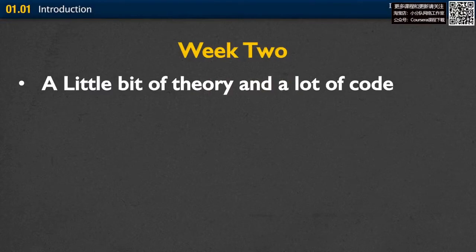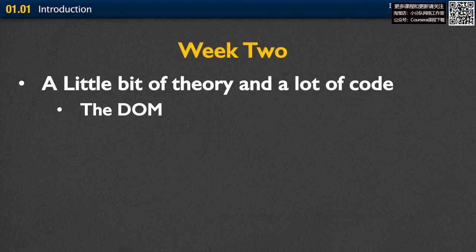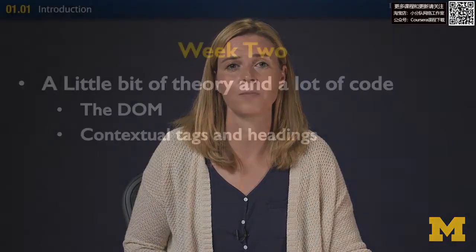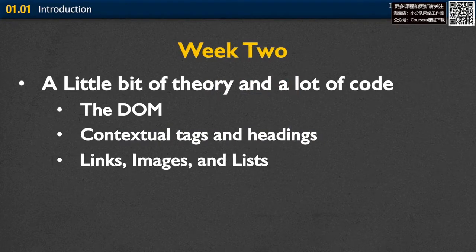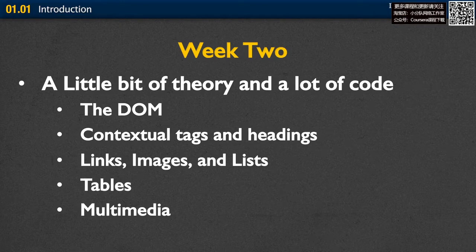In week two, we're going to talk a little bit of theory and then, unfortunately for some people, a lot of code. There's this idea of something called the document object model upon which all web pages are built. If I can get you to understand just a little bit about that, then later on, if you decide to use WordPress or some other software to make your own website, you're going to understand what's going on so much better. We're going to talk about contextual tags, headings, links, images, lists, tables, and also multimedia in case you'd like to add any video or audio to your site.